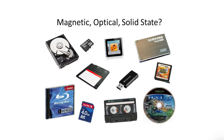Pause the video and see if you can identify from the images which ones are magnetic, which are optical, and which are solid state. The magnetic hard drive is on the top left, then there's a Blu-ray which is optical, an SD card which is solid state, a magnetic tape at the bottom, and an Xbox Halo optical disc. Then there's a solid state Nintendo DS cartridge, a Samsung SSD, a USB pen drive which is solid state, a magnetic floppy disk, a SanDisk micro SD card, and something like an iPod which is solid state.